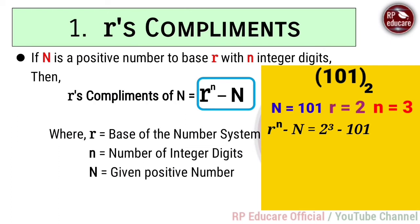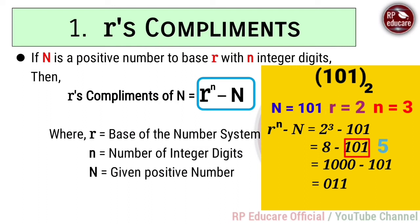Applying the formula: 2 to the power 3 minus 101. Solving: 2³ = 8, and converting 8 to binary gives 1000. Then 1000 minus 101 = 011. To verify: 101 in binary = 5 in decimal; 8 minus 5 = 3; and 3 in binary is 011. So the 2's complement of 101 is 011.